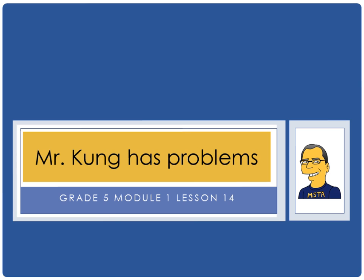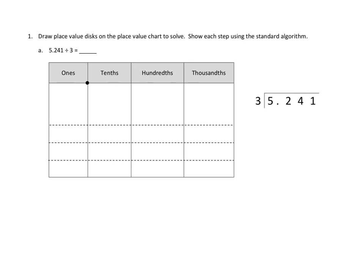Let's take a look at a couple problems from tonight's homework, and we'll see if we can get you going. Problem number one, I'm going to do 1A. The directions are pretty straightforward: draw place value disks on the place value chart to solve. Show each step using the standard algorithm.